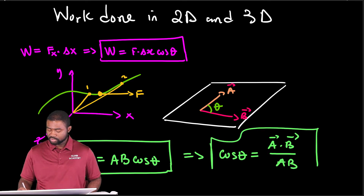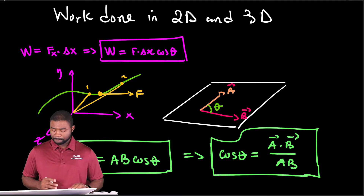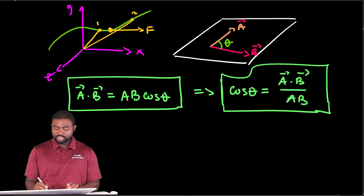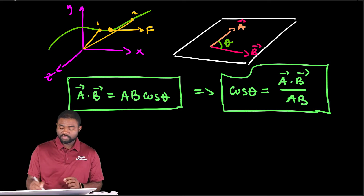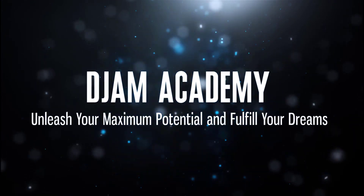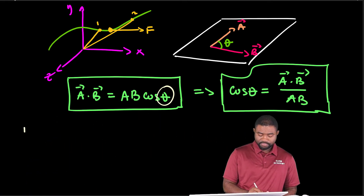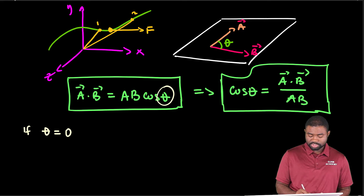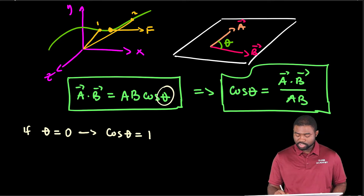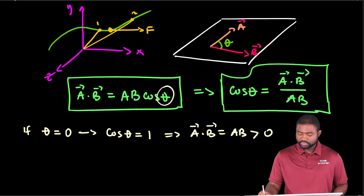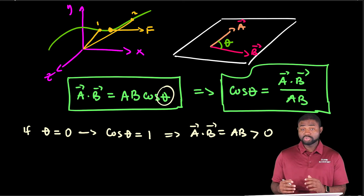From the definition you can see that the dot product — which is a scalar — can be positive, negative, or zero depending on the value of theta. For example, if theta equals zero, the cosine of theta equals one, which implies that a dot b equals ab, which is greater than zero. So the dot product is positive when vectors a and b are pointing in the same direction.